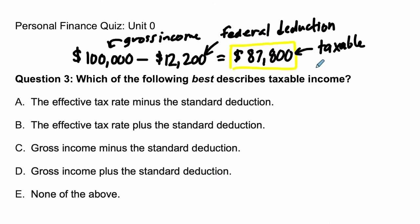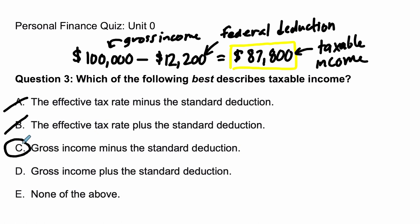So this is called taxable income. Let's find that choice. The effective tax rate minus the standard deduction — no, that's not what we're talking about here. Gross income minus the standard deduction, choice C. That's our answer. All right, hope that helps.